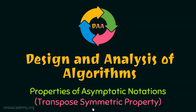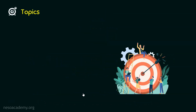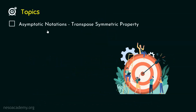So far, we have discussed various properties of asymptotic notations — the general property, the reflexive property, and the symmetric property. Now, we will discuss the transpose symmetric property of asymptotic notations. The topic of this lecture is: asymptotic notations transpose symmetric property.